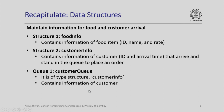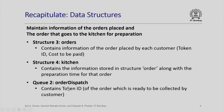Let us recapitulate the various data structures quickly. Maintaining information for food and customer arrival was in structures called food_info and customer_info. Then there was a customer queue which contains information about the customer arrival. Next, we were to maintain information about the orders placed and the order that goes to the kitchen for preparation. We had an order structure which contains information of the order: token ID, cost to be paid, etc. Kitchen was the main structure which contains information stored in the structure order along with the preparation time for that order.